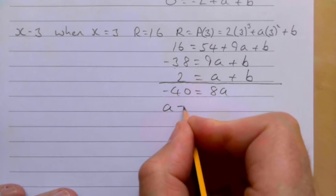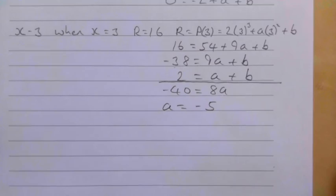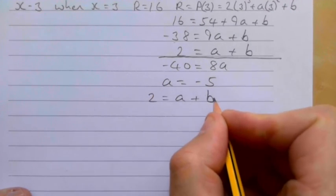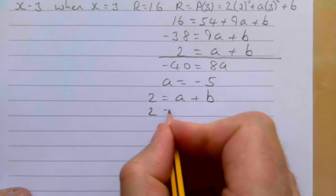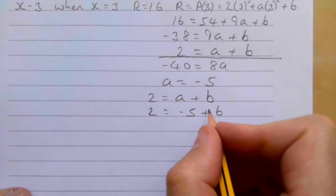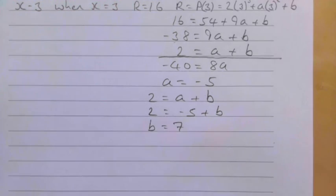So a = -5. Substituting into 2 = a + b: 2 = -5 + b, which means b = 7.